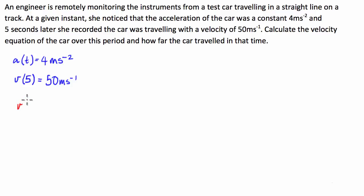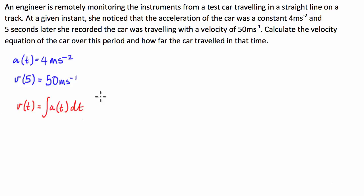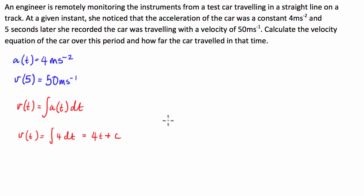We know that the velocity in terms of time, as a relationship to acceleration, is equal to the integral of the acceleration function with respect to time. So if we use the information we've been given, we can say that the velocity in terms of time is going to be equal to the integral of 4 dt, which is equal to 4t, and because it's an indefinite integral we have to put our constant term on the end, plus c.